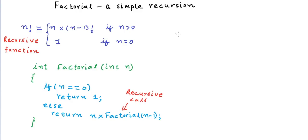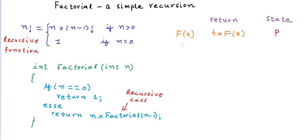Let us now see how the computer understands and executes this method. Let's say we want to calculate factorial(4), which I'll write as F4. When the computer tries to calculate F4, it sees that it is calling F3 recursively. So it says: I will pause the execution of F4, go and calculate F3 first, and then come back. It saves the current state of F4 into memory and goes on to calculate F3.